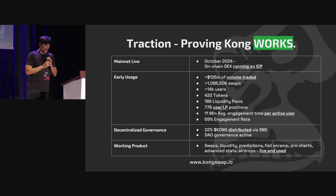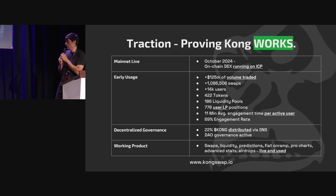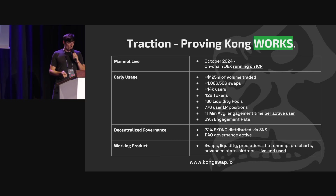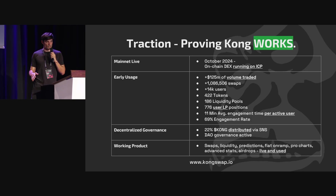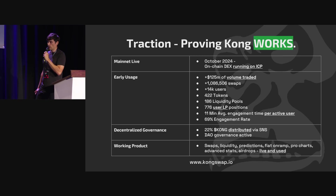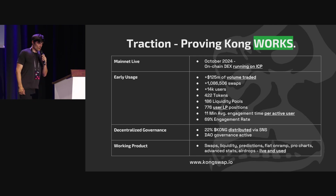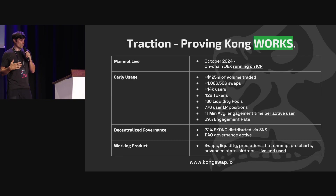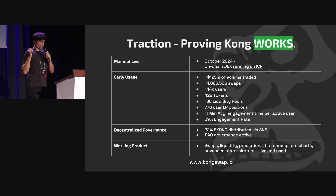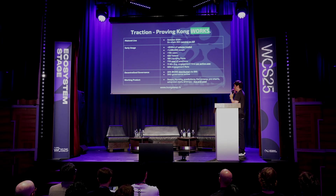We have real traction. We launched in October 2024, running fully on-chain on ICP. So far we've transacted over $125 million in volume, have over 14,000 regular trading users, listed 42 tokens, have about 168 liquidity pools, and close to 800 liquidity providers. Users spend on average 11 minutes on Kong Swap — verified via Google Analytics — and we have a 70% engagement rate among site visitors.